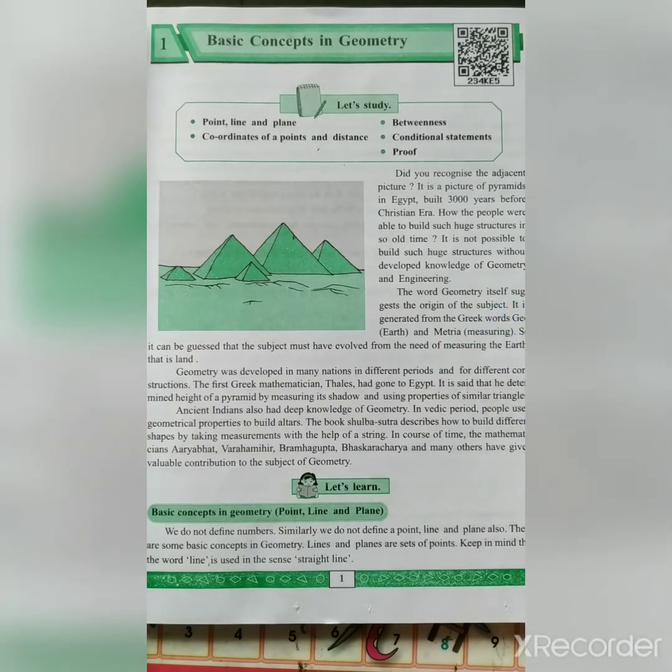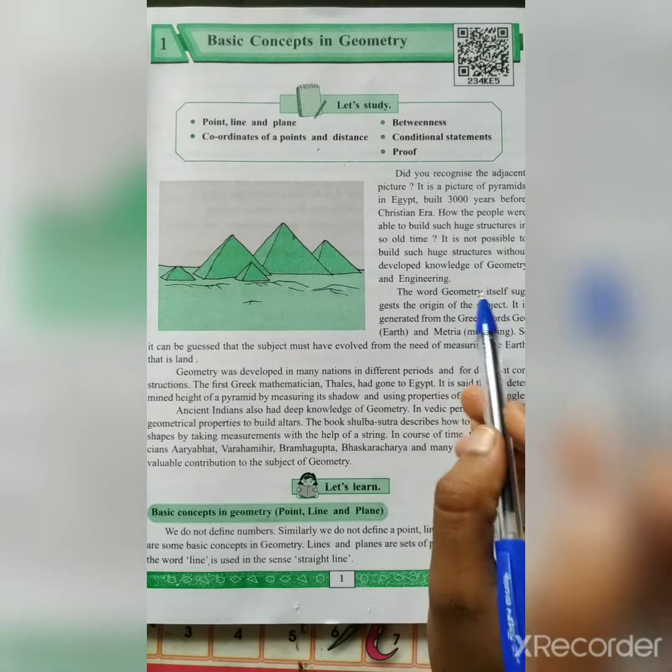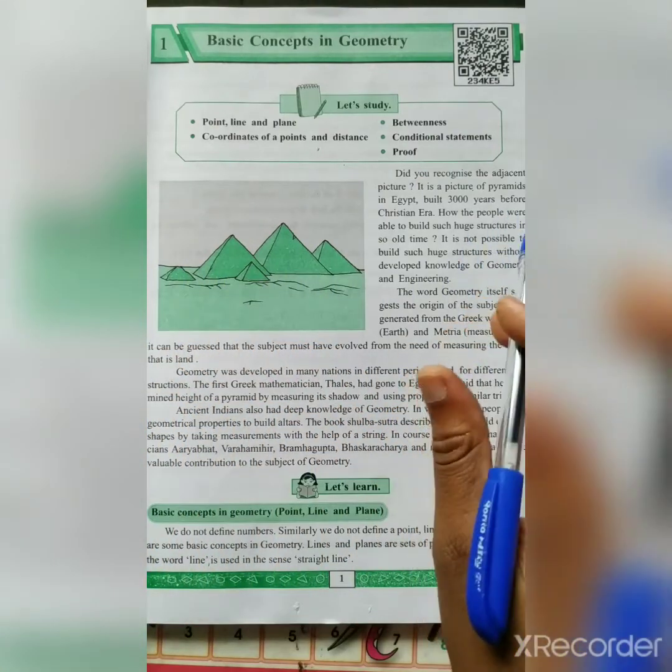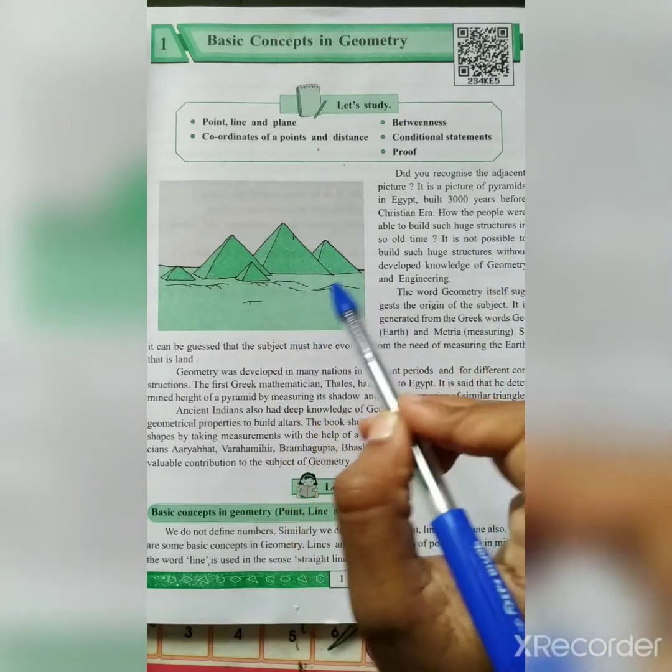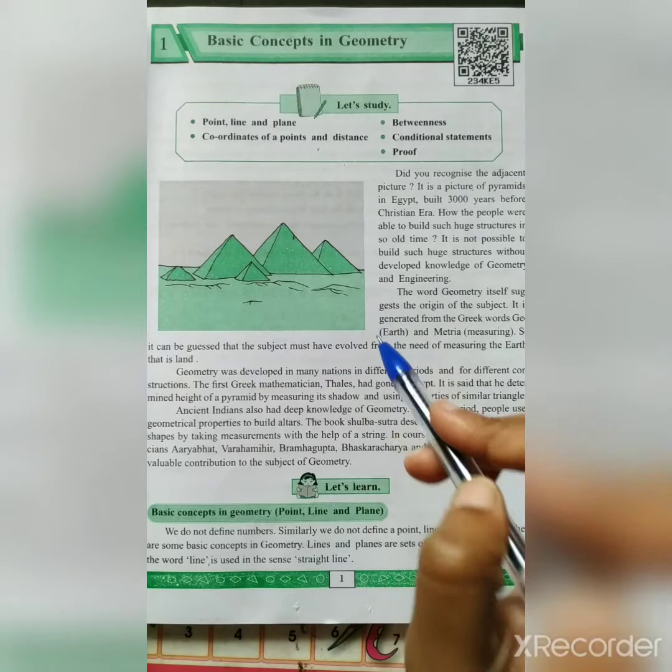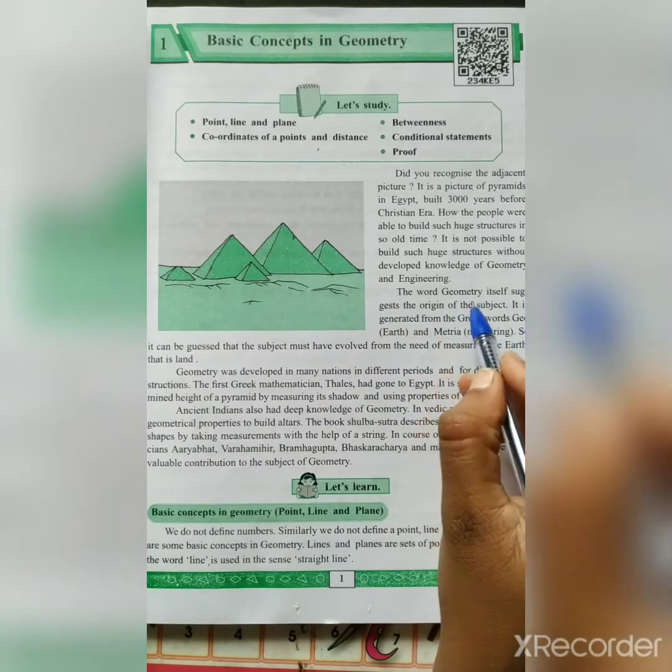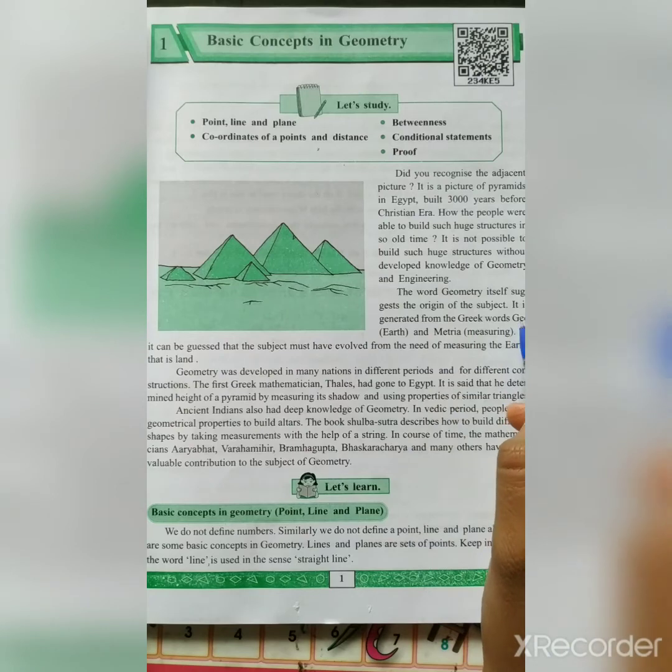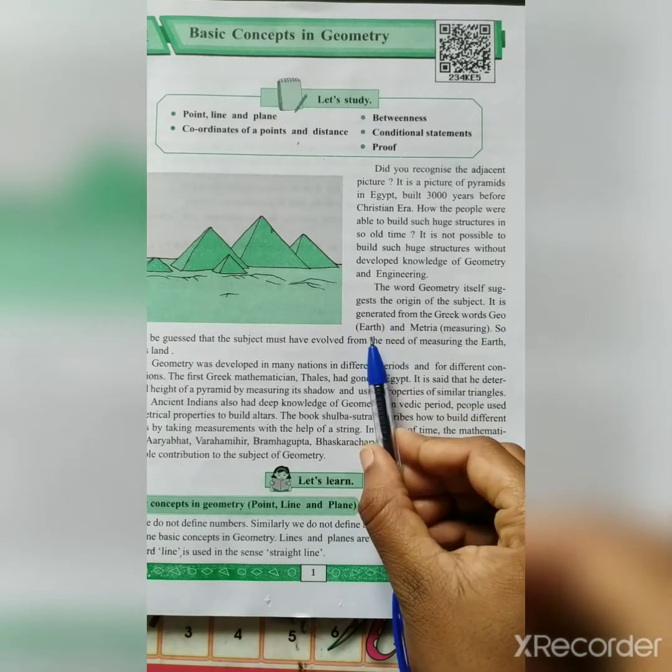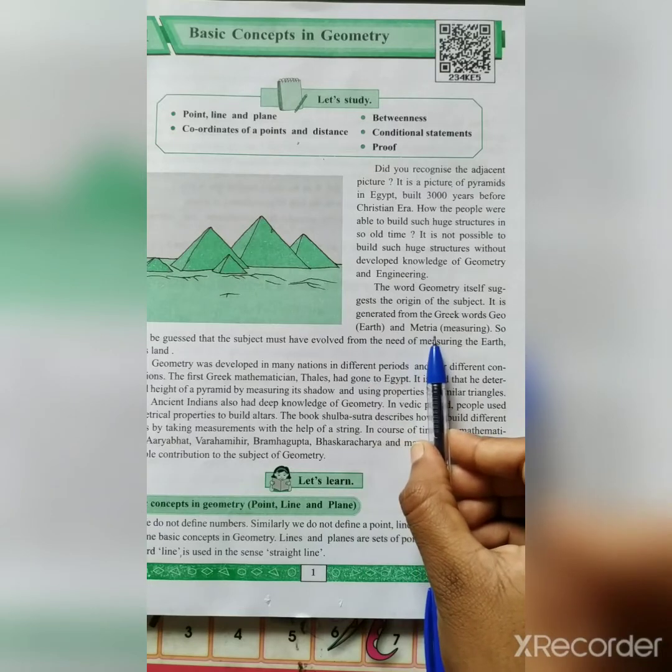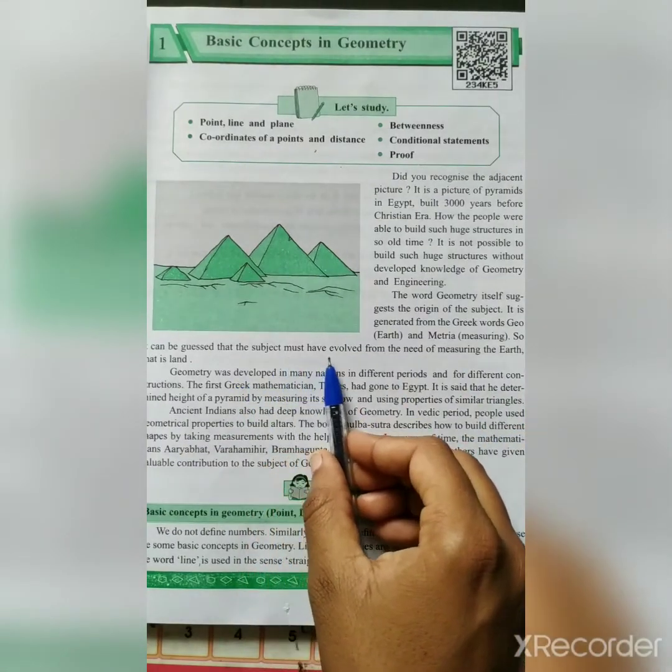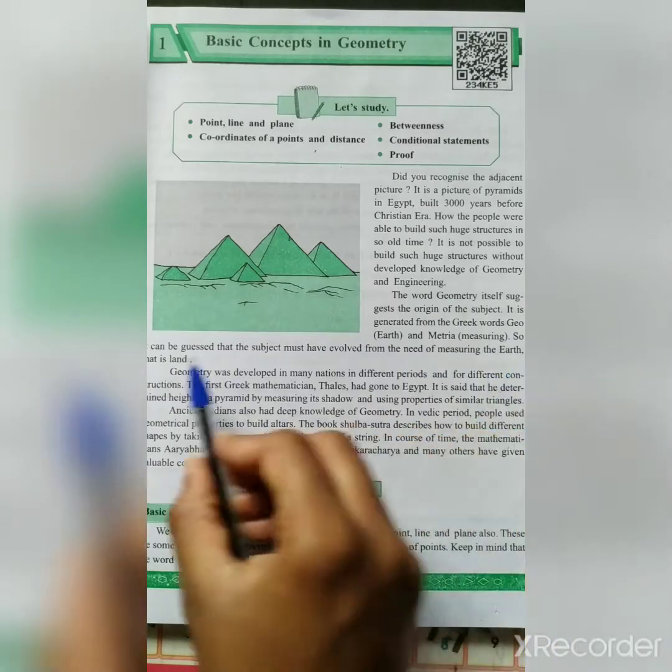How the people were able to build such a huge structure in so old time? The word geometry itself suggests the origin of the subject. It is generated from the Greek words, geo. Greek word is geo, that means earth, and materia is nothing but the measuring. So it can be guessed that the subject must have evolved from the need of measuring the earth, that is land.